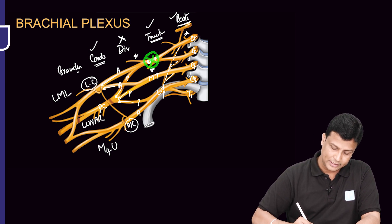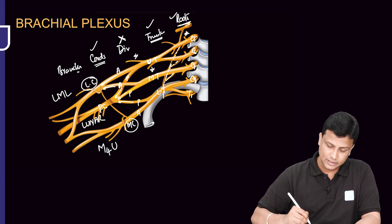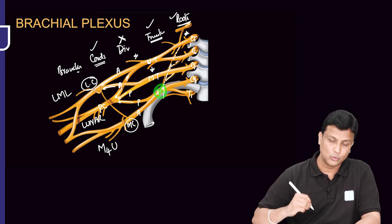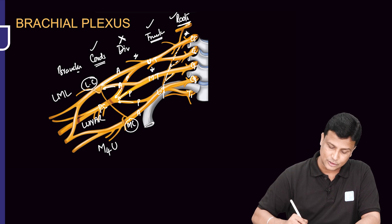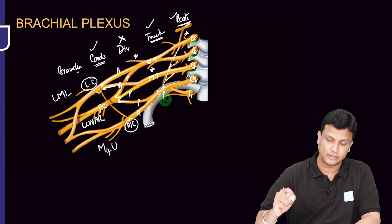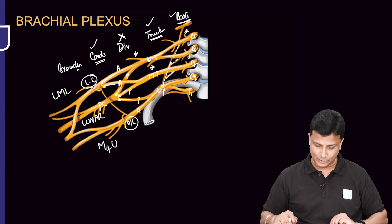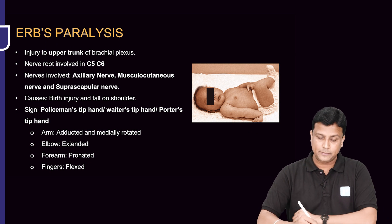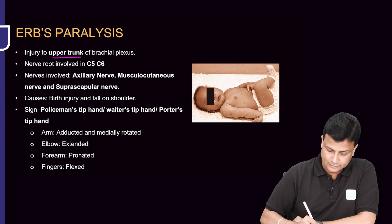Regarding injuries: injury to the upper trunk leads to Erb's paralysis, injury to the lower trunk leads to Klumpke's paralysis, and injury to the long thoracic nerve (from C5, C6, C7) leads to winging of the scapula.